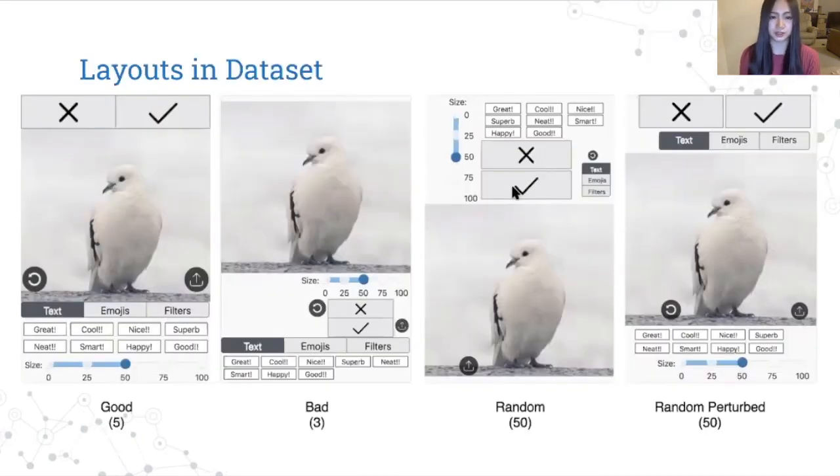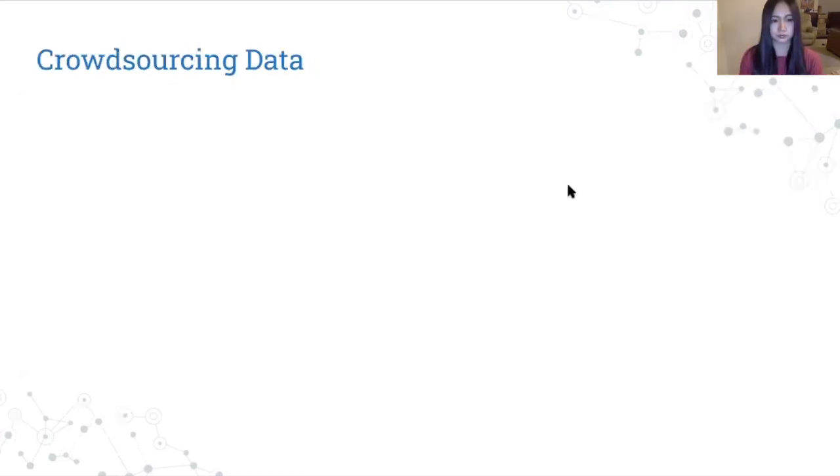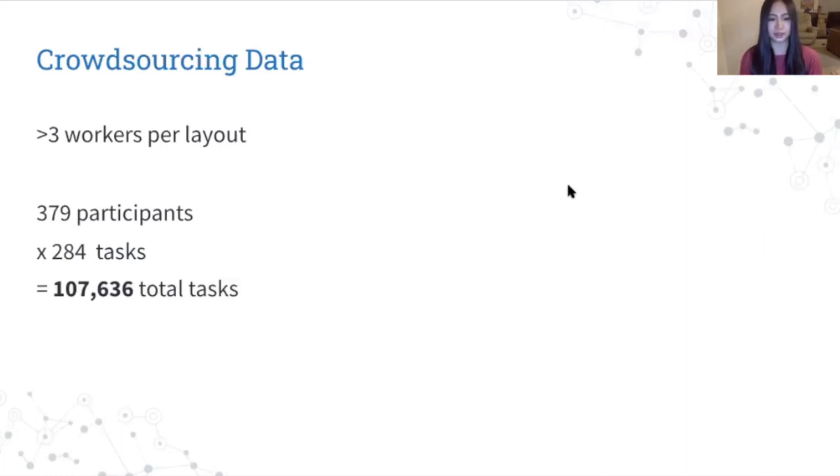So here are some examples of the layouts in the dataset. Out of the 108 layouts in the dataset, five are considered good, which means they're designed to meet many design guidelines, and three are bad, they violate many design guidelines. To ensure comprehensive coverage of the layout space, 100 layouts were generated randomly by two different techniques. We crowdsourced the task performance data on Amazon Mechanical Turk. We assigned at least three workers per layout, and we had 379 participants who completed 284 tasks. So we had data on over 100,000 tasks.